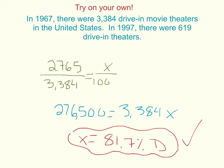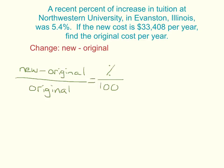Now one more story problem that's set up a little differently. Instead of solving for the percent, I'm going to give you the percent and we have to solve for the original amount. A recent percent of increase in tuition at Northwestern University in Evanston, Illinois was 5.4%. If the new cost of tuition is $33,408 per year, find the original cost.